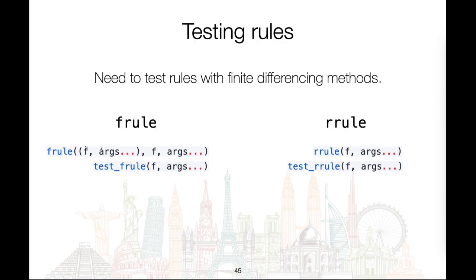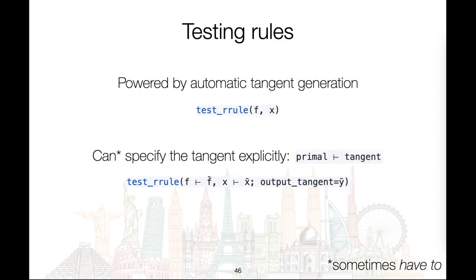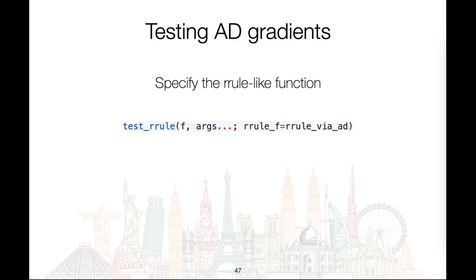As you can see, the syntax is very simple. This simple syntax is powered by automatic tangent generation. It is also possible — and indeed sometimes necessary — to specify the tangents explicitly. Tangents can be specified for some or all of the arguments, and the output tangent can also be specified manually. Finally, it is also possible to test gradients computed by AD systems by passing in an rrule-like function as a keyword argument. And if you remember the rrule_via_ad function from the RuleConfig story, that very same function can be used here as well.